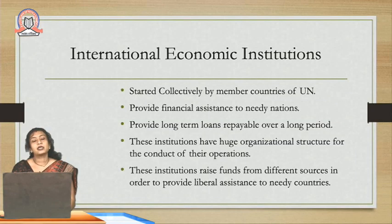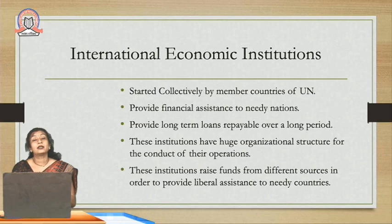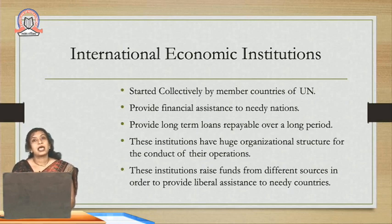In my first unit we have basically seen what is international marketing, what are the various orientations - that is the EPRG framework - that is the ethnocentric, polycentric, regiocentric and geocentric orientation. How can the entry into international marketing be made? Then what are the tariff and trade barriers, non-tariff barriers, and we had also seen what are the trading blocks. So this was what we had covered in the first unit of this subject.